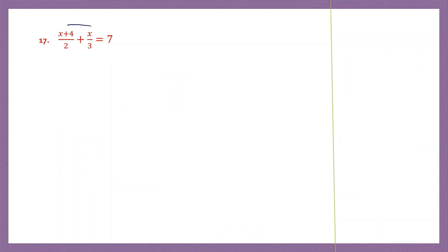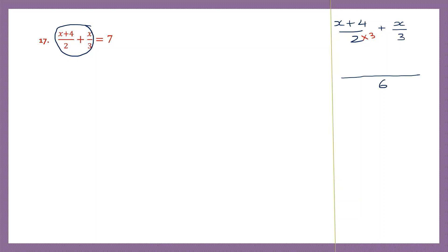Question 17. On the left hand side we have two fractions to work out first: x plus 4 by 2 plus x by 3. The denominators are two prime numbers, 2 and 3, so the LCM is their product: 6. Using 6 as the common denominator — 2 into 3 is 6, so multiply the numerator x plus 4 by 3, giving 3x plus 12. Then for the second fraction, 3 into 2 is 6, so multiply x by 2, giving 2x.